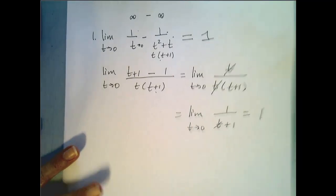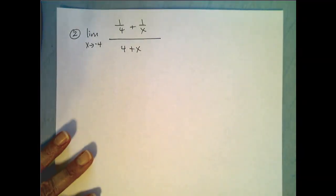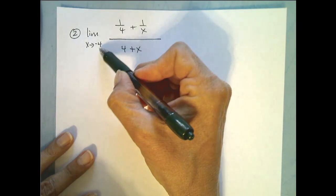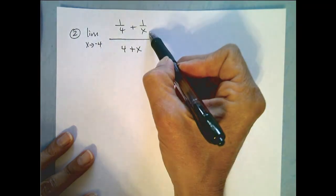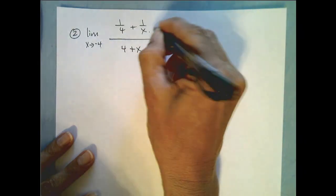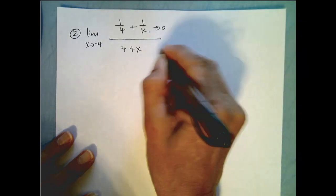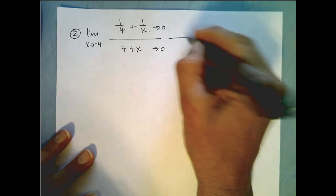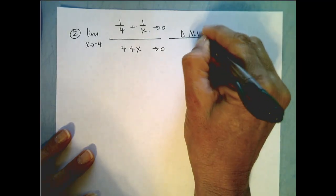Let's look at the second example which involves some complex fractions. So I notice if I plug in negative 4 for my x value this top goes to 0, the bottom also goes to 0, so this is a situation where we must do more work.